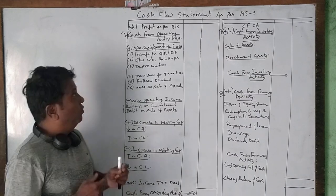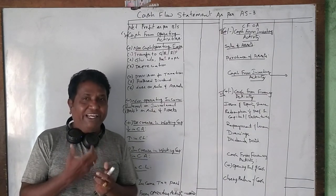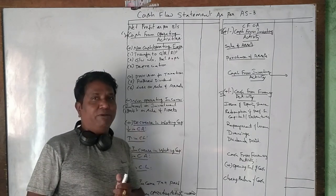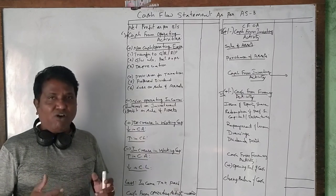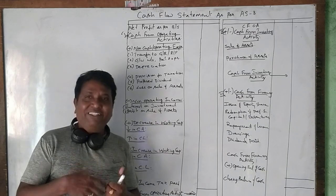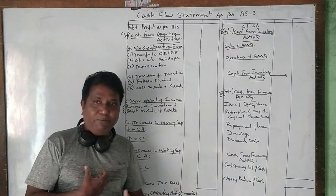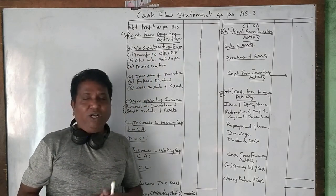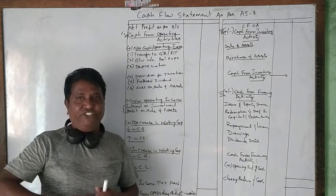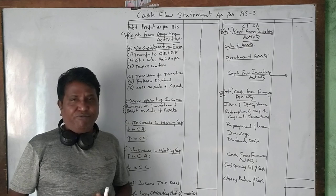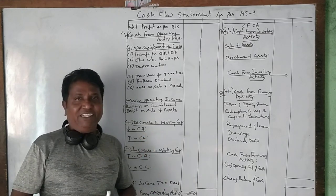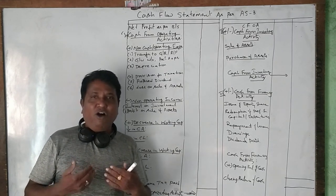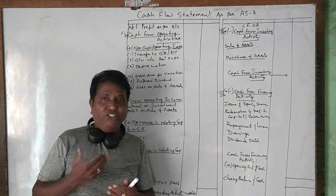Cash coming into and going out of the business happens in three major activities. The first is cash from operating activities. A business operates from the beginning of the year to the end of the year, and the cash earned through operating the business — by earning profit — is what we call cash from operating activity.